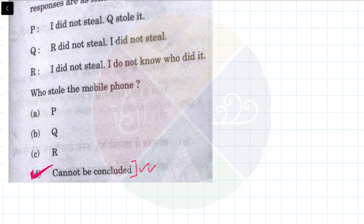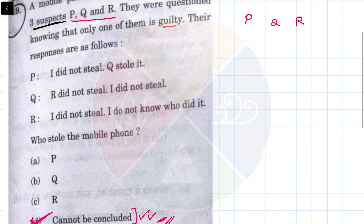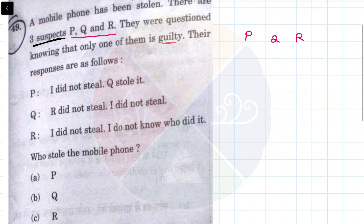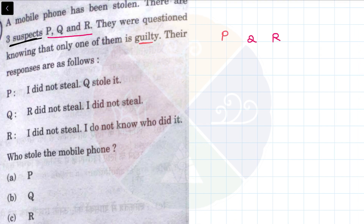So this is one answer — that is my answer. Now let's go for the second approach. Even if option D was not there, I would approach it this way. In this method, I will assume that the thief is telling the lie and the others are telling the truth. Three people are there: P, Q, and R.